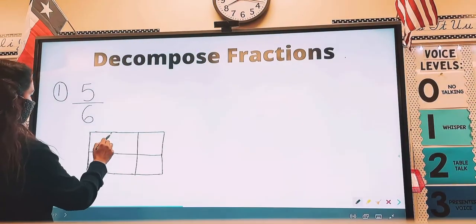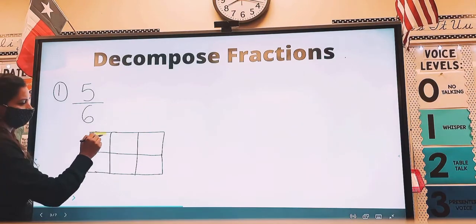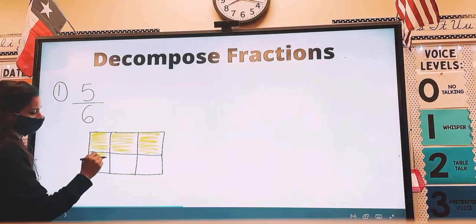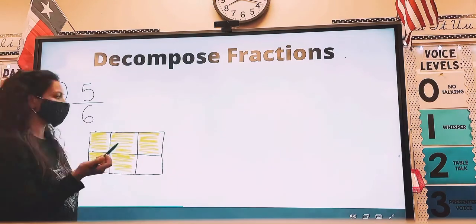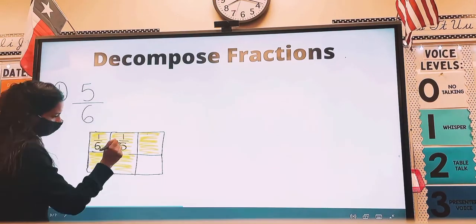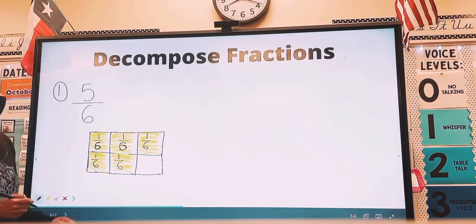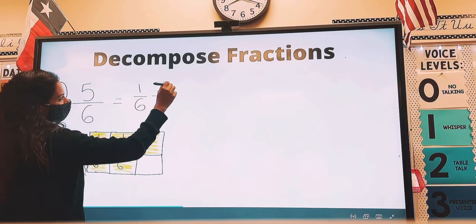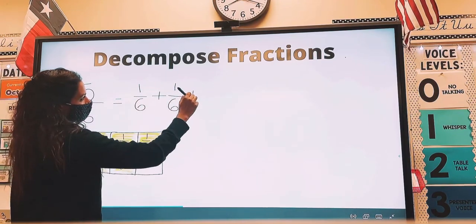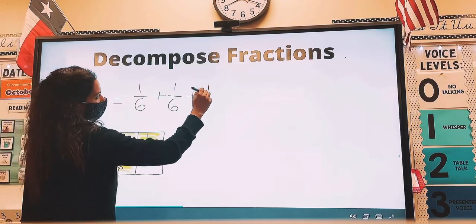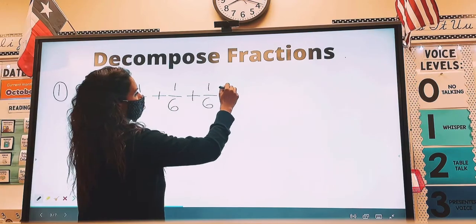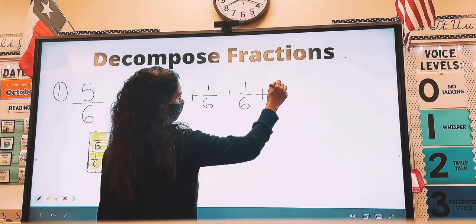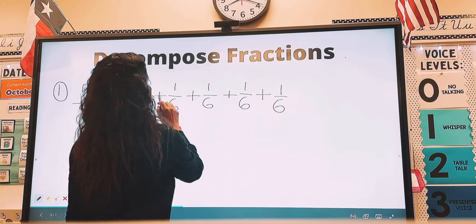Let's try another example: five-sixths. Go ahead and draw your six squares and shade in five pieces. Label the unit fraction one-sixth in each square, and to decompose it, it is one-sixth plus one-sixth plus one-sixth plus one-sixth plus one-sixth.